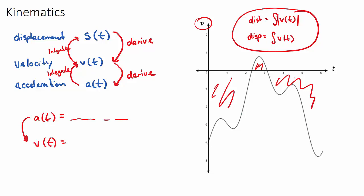Once you've practiced a few of these questions, remember the key distinction between distance and displacement. The three main functions are displacement, velocity, and acceleration. To go down the chain, differentiate; to go up the chain, integrate. These tools give you really useful information about moving objects. Good luck.